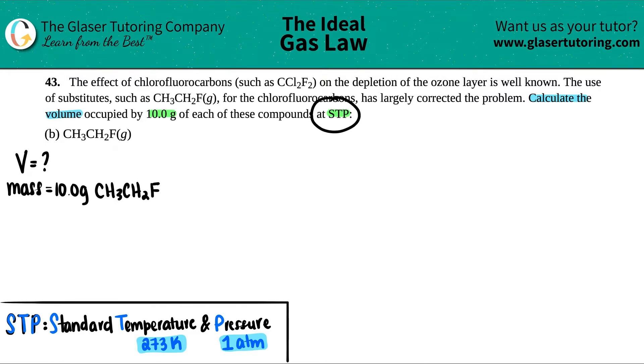And they're telling us that it's at STP. Now remember, STP is hidden information for a temperature and a pressure. STP stands for standard temperature and pressure. The temperature is always going to be 273 Kelvin, and the pressure is always going to be 1 atm.